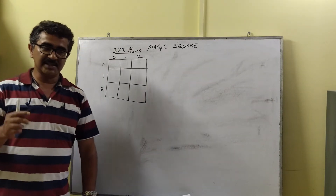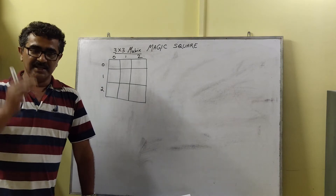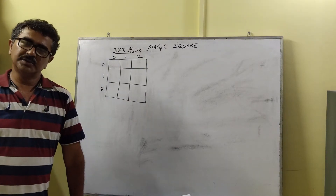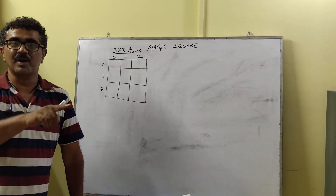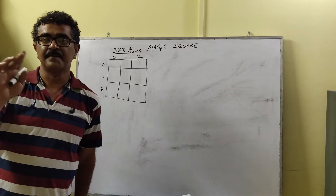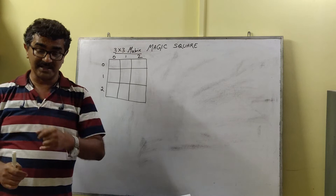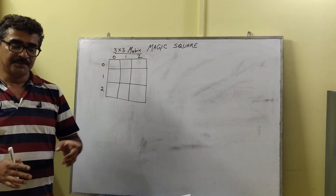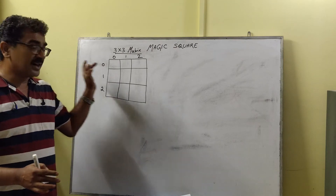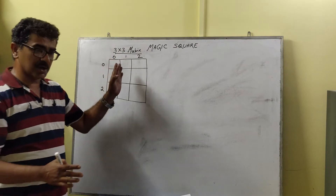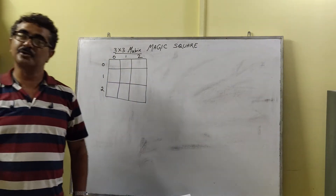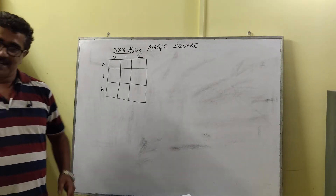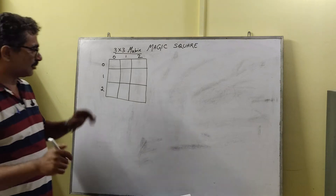The logic is: we will insert numbers from 1 to 9, since this is a 3x3 matrix — that is 3 squared equals 9. For a 5x5 matrix it would be 1 to 25. The first number, 1, is inserted in the first row, middle column — the central column of the first row. We can determine this in a generalized way.